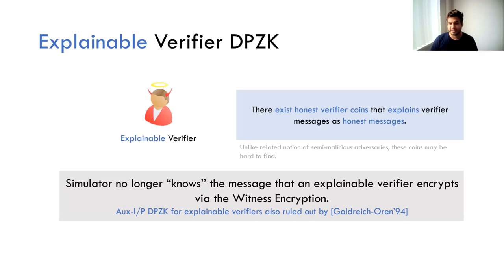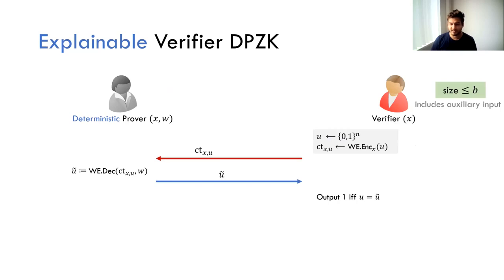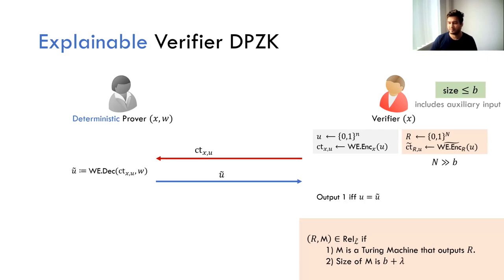As with going from honest verifier to malicious verifier ZK, we use an additional trapdoor statement that only the simulator can use but a cheating prover cannot. Since explainable verifier DPZK is ruled out for auxiliary input zero knowledge, we must bound the auxiliary input. It's simpler to think of the verifier plus auxiliary input as bounded by some value B. In addition to the honest verifier protocol, the verifier samples a really large string R of length N, where N is much larger than B, and uses R as a statement for a separate witness encryption scheme.